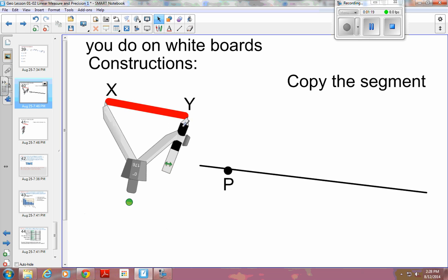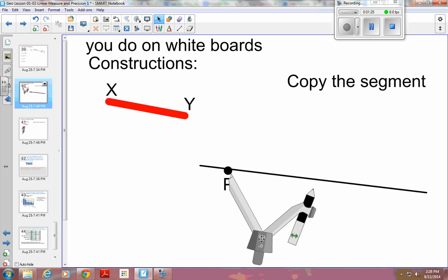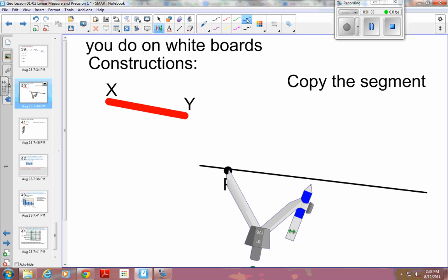Once I've got my compass at the exact right width, I'm going to take it, I'm going to put my point on my point, and then I can take my compass, and draw an arc.